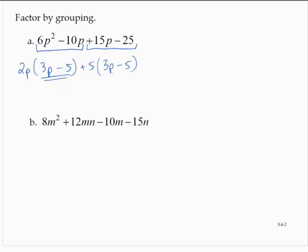Now notice that I have two terms with a common factor of 3p minus 5. So that factors as 3p minus 5 by 2p plus 5.